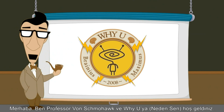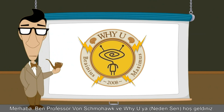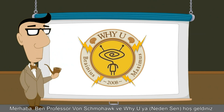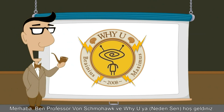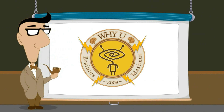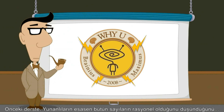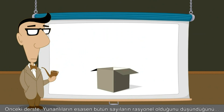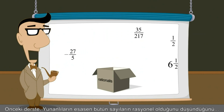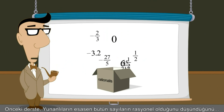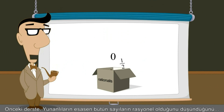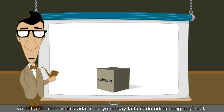Hello, I'm Professor Von Schmohawk, and welcome to Why U. In the previous lecture, we saw that although the Greeks originally thought that all numbers were rational, they eventually discovered that there were quantities that could not be represented by rational numbers.